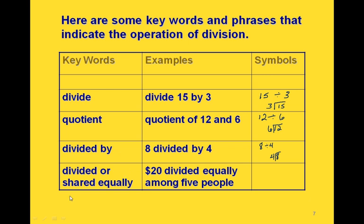And if we talk about sharing equally, that's exactly what division means. If we want to figure out how we would divide $20 equally among 5 people, that means we're taking the 20 and dividing it by 5. So to write this out in symbols, this would be 20 divided by 5, or we could write it this way.